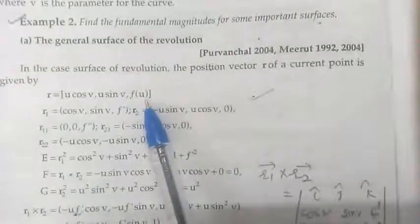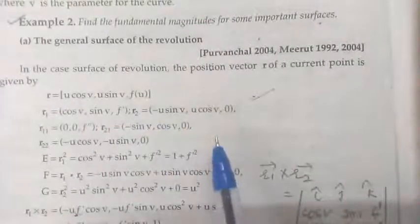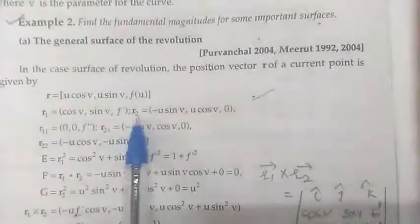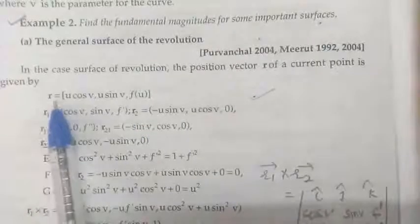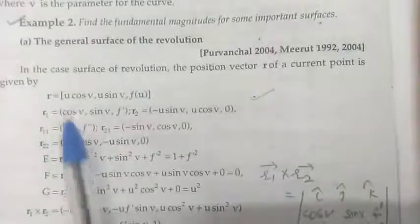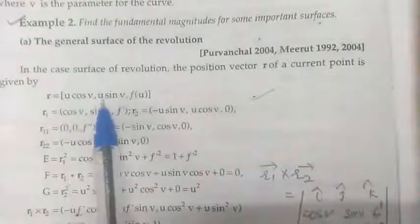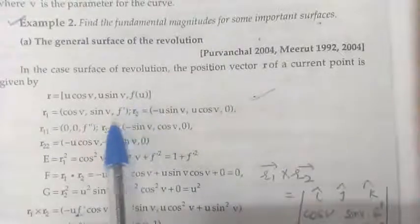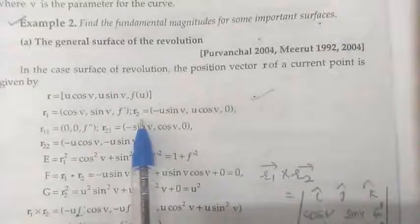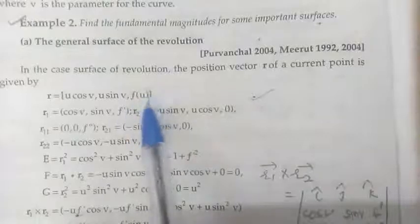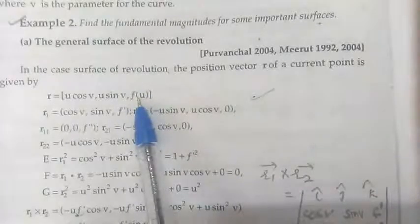Now, we will find all the fundamental magnitudes: E, F, G, L, M, N. To find these six fundamental magnitudes, we require r₁ and r₂, where r₁ is the partial derivative of vector r with respect to parameter u. Differentiating with respect to u: the derivative of u cos v is cos v, derivative of u sin v is sin v, derivative of f is f'. For r₂, the partial derivative with respect to v: derivative of cos v is −sin v, derivative of sin v is cos v, and f(u) is not a function of v, so that term is 0.